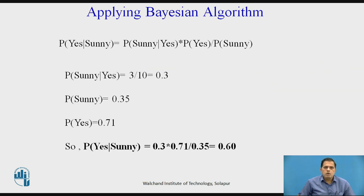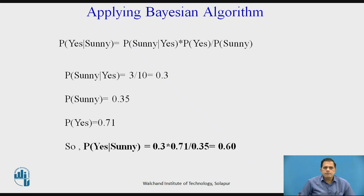Now we apply the Bayesian formula to these values. Probability of yes given sunny equals probability of sunny given yes, multiplied by probability of yes, divided by probability of sunny. P(sunny|yes) = 3/10 = 0.3. P(sunny) = 0.35 and P(yes) = 0.71. So P(yes|sunny) = 0.3 × 0.71 / 0.35, which gives 0.60.